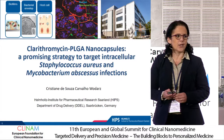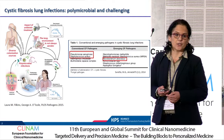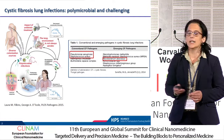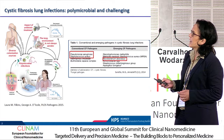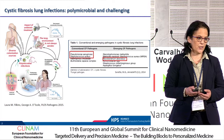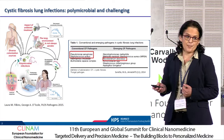Why these pathogens? Because in the context of cystic fibrosis lung infection, they are really important pathogens. Since this disease is really polymicrobial, it's a challenge to treat patients, because you are dealing with not only one pathogen, but several of them, including fungi and bacteria.